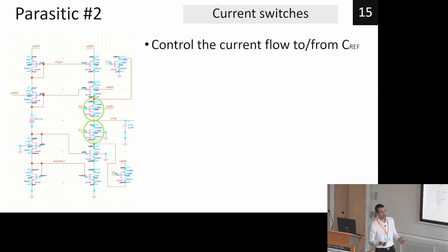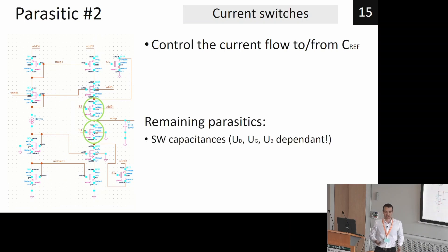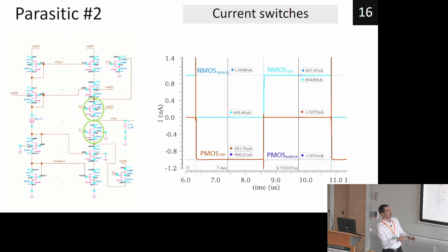Then we have the second parasitic coming from the current switches that control the current flow to and from the reference capacitor. Here we introduce additional capacitance to our reference node, which is unwanted, and this capacitance is also dependent on drain-gate-bulk voltage. And this also distorts our charging and discharging current on our capacitor.